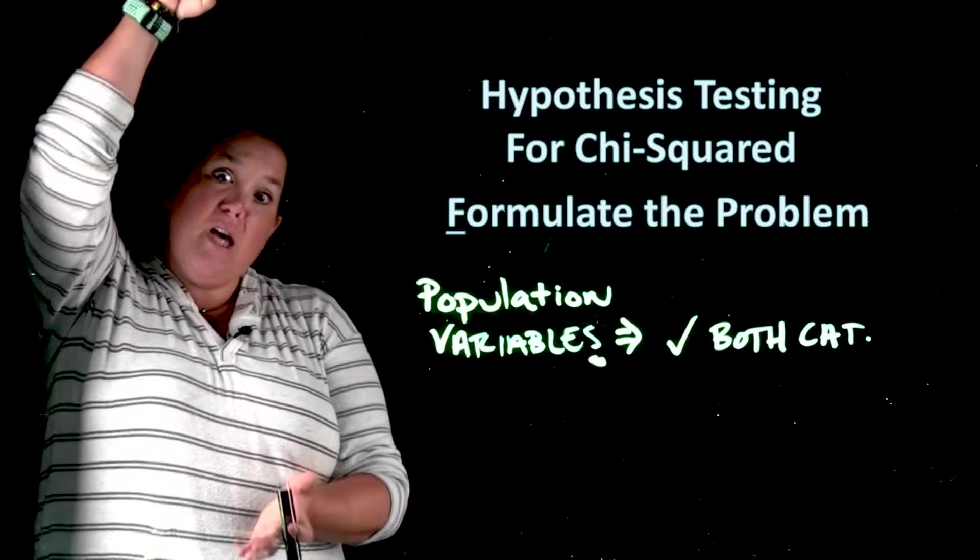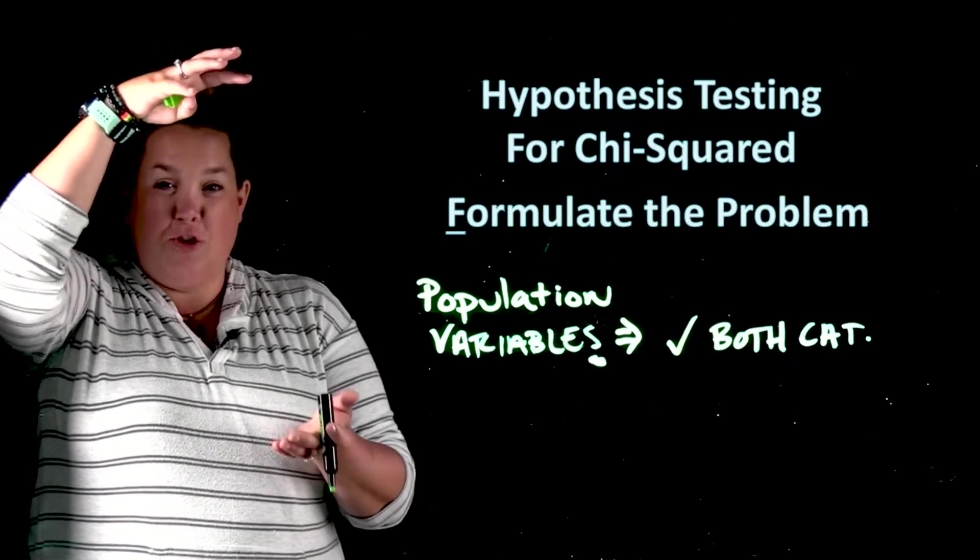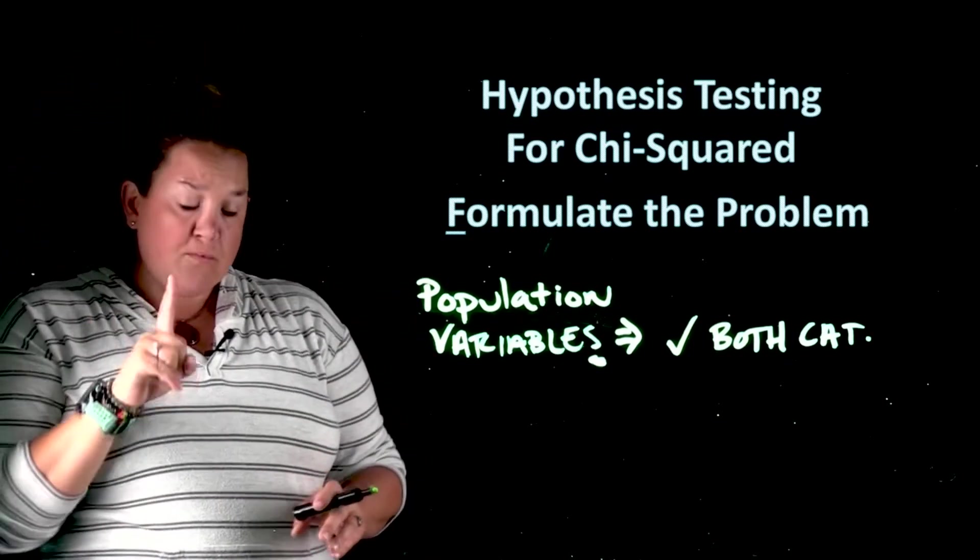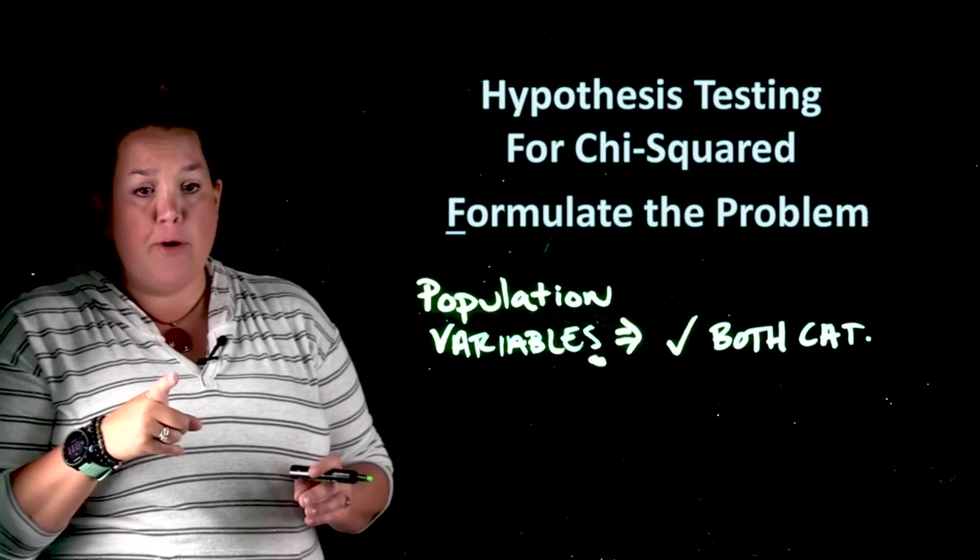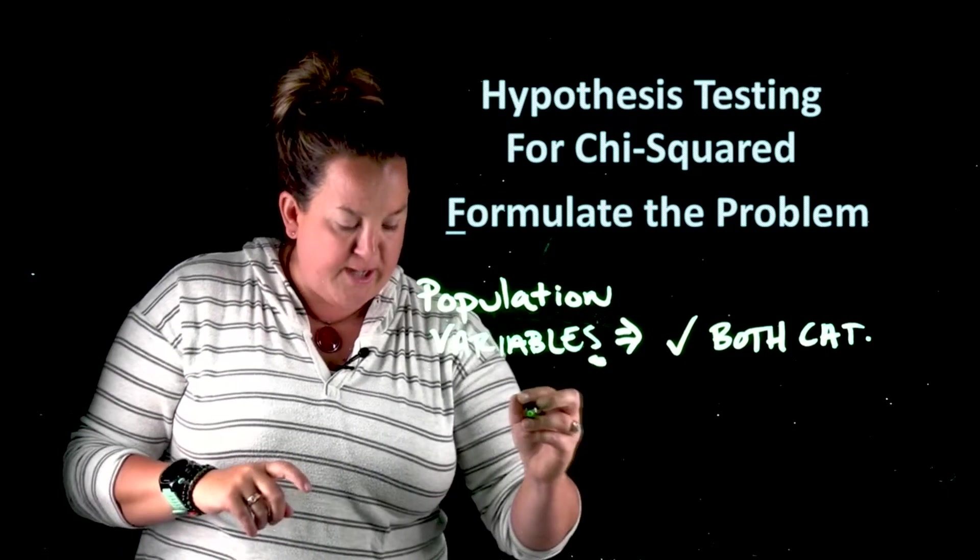But then they'll have a big list of variables that are actually quantitative, and it's just representing all of the quantitative numbers that they had. So don't make that mistake yourself. Make sure that both variables are categorical in order to perform this hypothesis test for chi-squared.